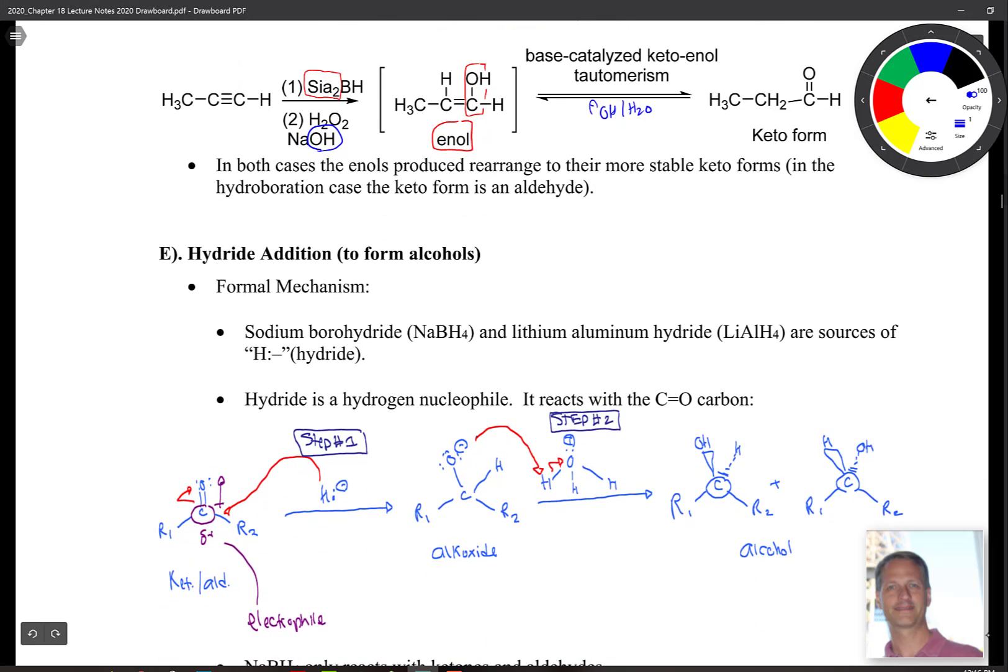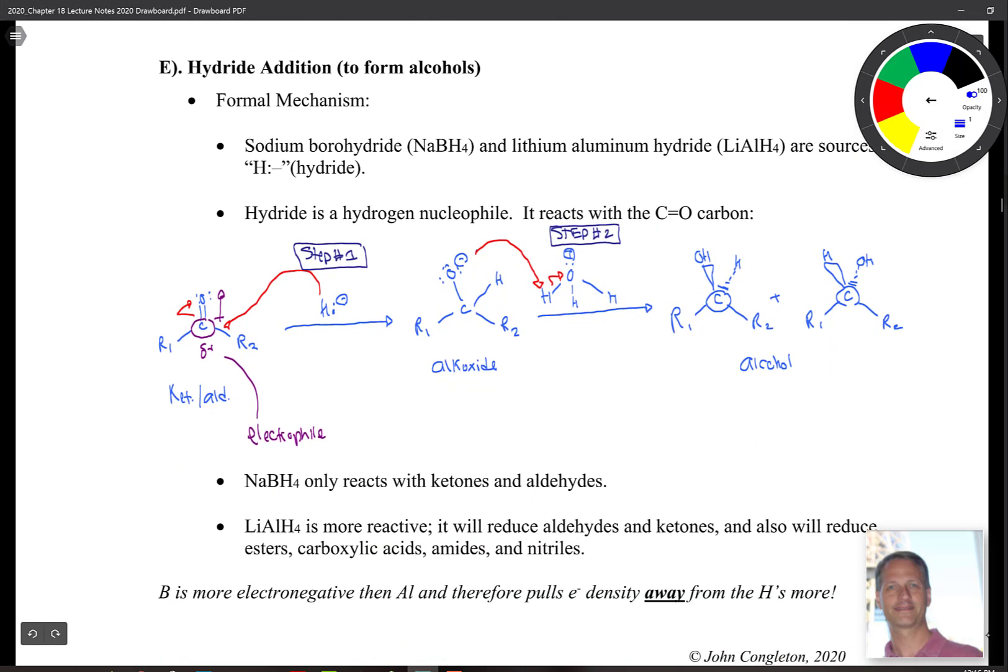We've also seen hydride addition to form alcohols. In hydride addition, this is from last semester, you have H minus. If you remember, we have two sources of H minus: LiAlH4, which we often would abbreviate as LAH, and also NaBH4. LAH is more reactive. It'll reduce aldehydes, ketones, esters, carboxylic acids, amides, nitriles, whereas NaBH4 only reacts with ketones and aldehydes.